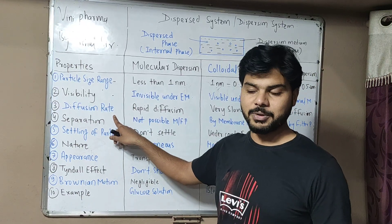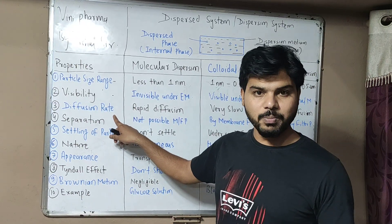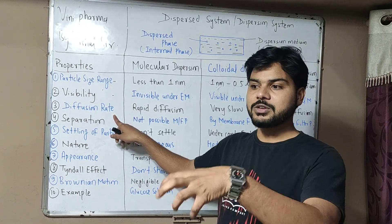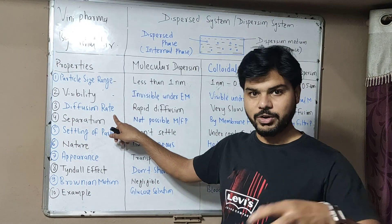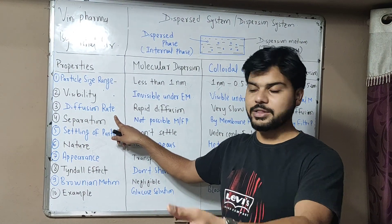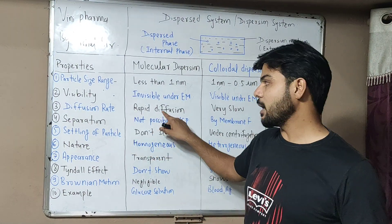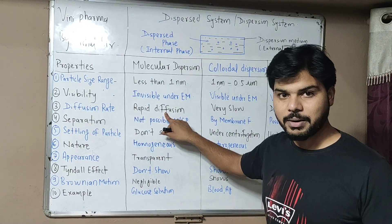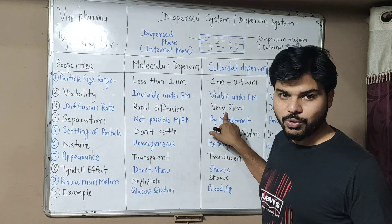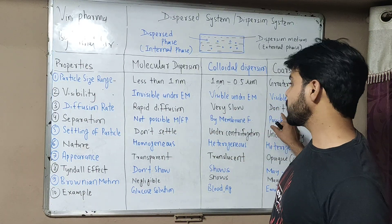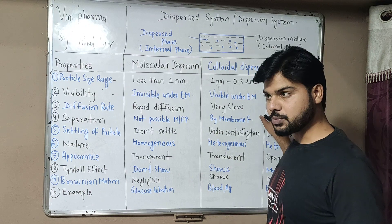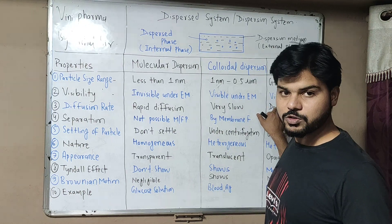Diffusion rate means the movement — the mass movement of a substance from one area to another. In true dispersion there is rapid diffusion. In colloidal dispersion diffusion is very slow. In coarse dispersion particles do not diffuse.